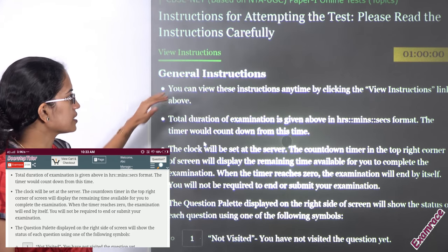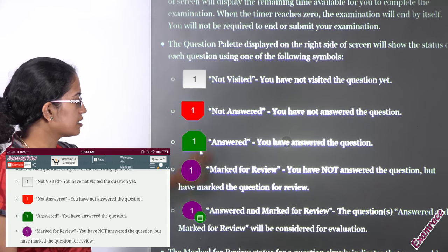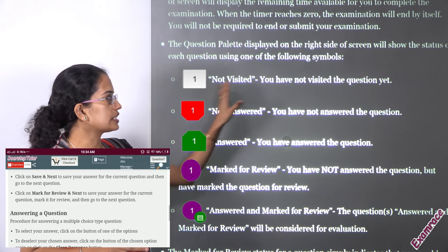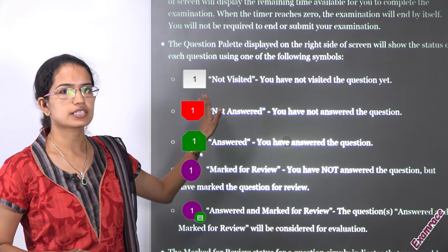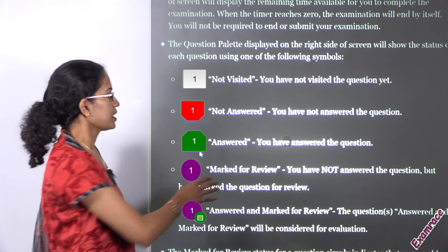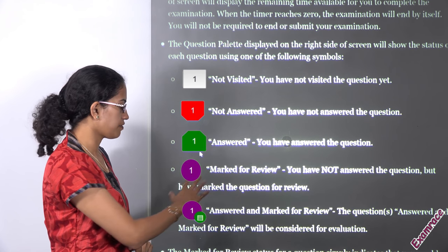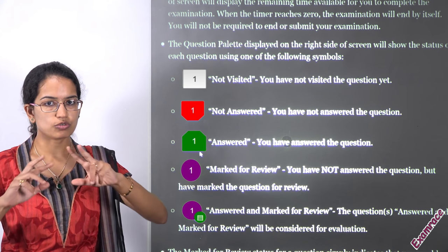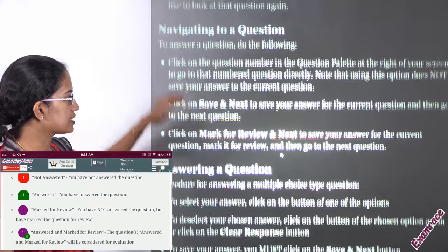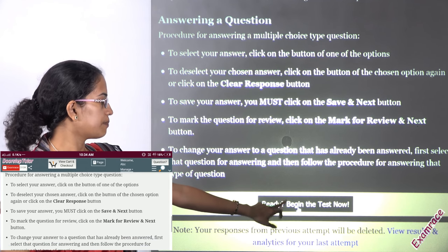As soon as you click 'Attempt Test,' a list of instructions will come up. You will have certain signs that are very important to understand: questions not visited will be in one color, questions not answered will have a specific sign and color, answered questions will be in a specific format, and then there are 'Marked for Review' and 'Answered and Marked for Review' — those two categories are different. After reading the instructions, you click 'Ready — Begin the Test Now.'